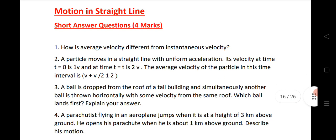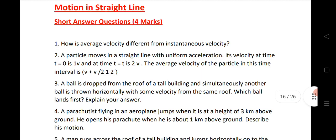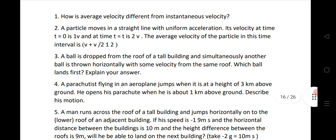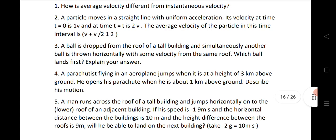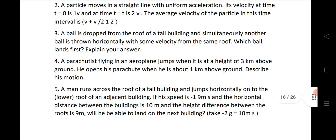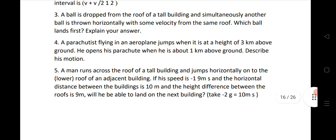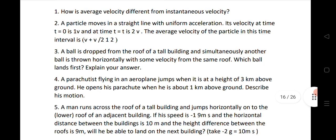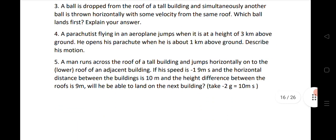Next, Straight Line Motion - this year we are expecting SAQ from straight line. The first SAQ is how average velocity differs from instantaneous velocity, a particle moving in a straight line, a ball dropped from a roof, parachutist, and a man crosses a roof of a building. These five SAQs I have given - very important SAQs from this chapter.